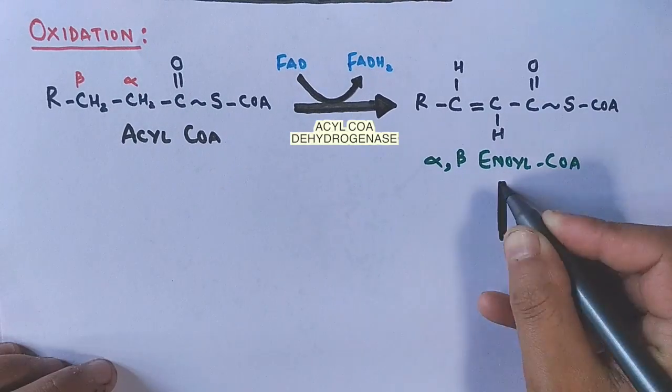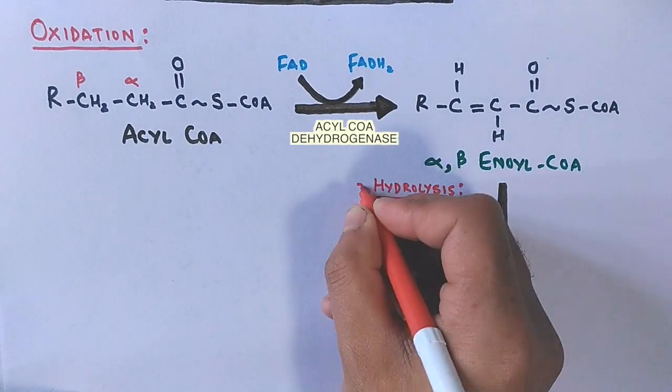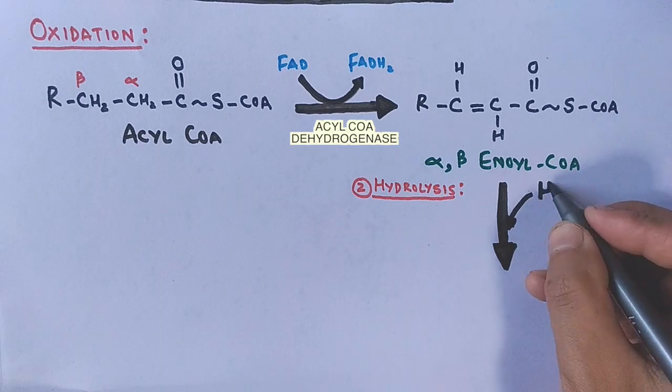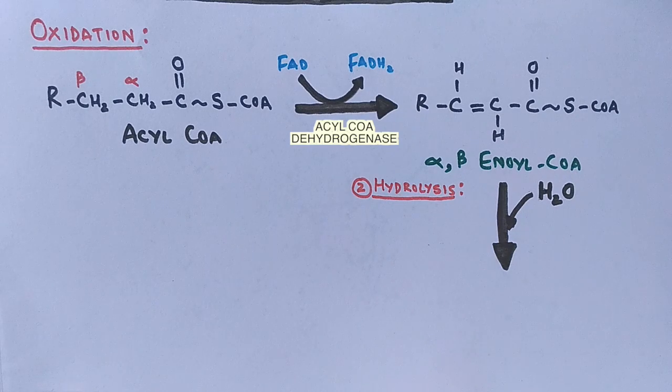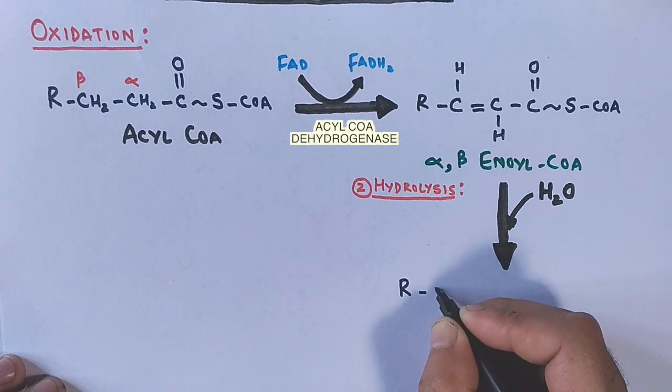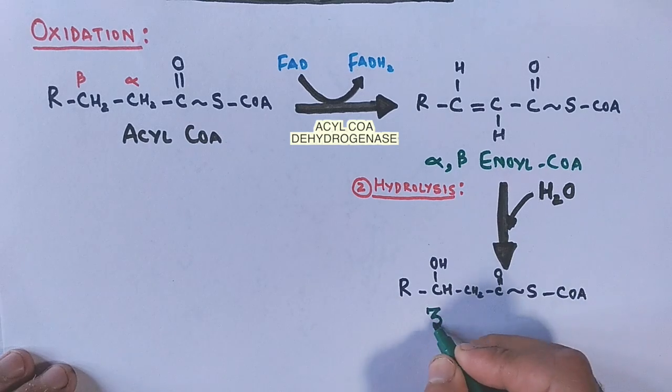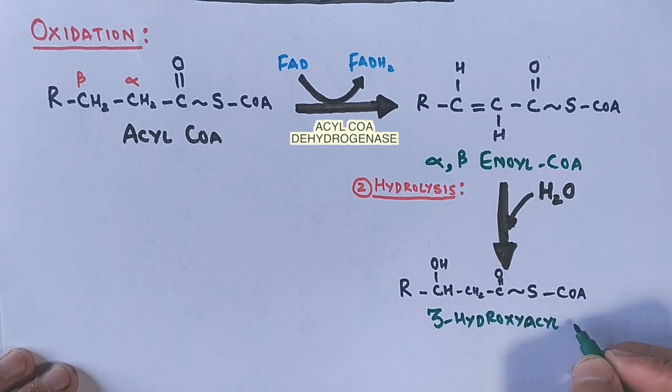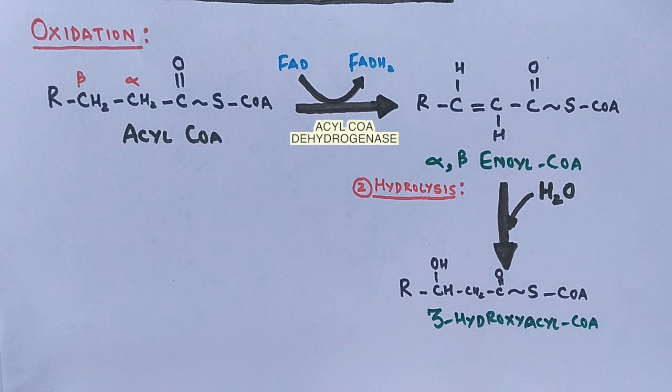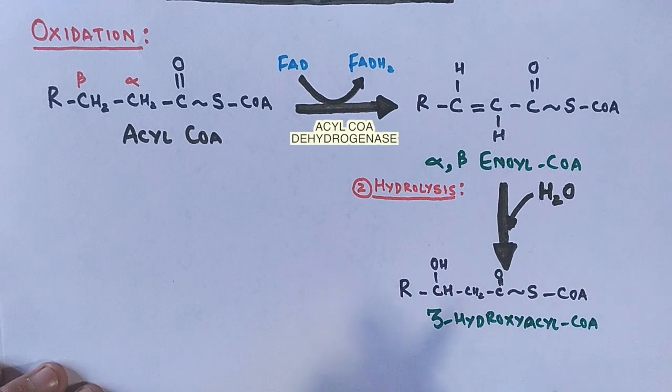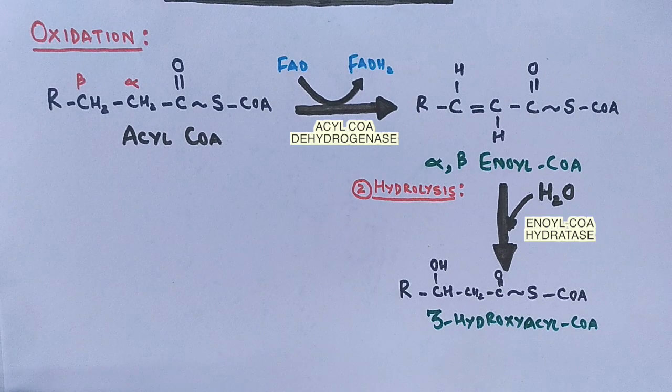After that, hydrolysis occurs on the enoyl-CoA molecule, which is the addition of a water molecule. From this reaction, we get a molecule called 3-hydroxyacyl-CoA. As you can see, the beta carbon now has a hydroxyl group attached to it, which is donated from water via hydrolysis. This reaction is catalyzed by the enzyme enoyl-CoA hydratase.